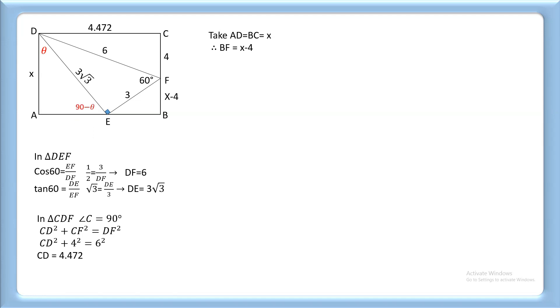Therefore, angle DEA equals 90 degrees, so angle FEB equals θ and angle EFB equals 90° minus θ. According to angle-angle-angle similarity, triangle ADE and triangle BEF are similar triangles. This is the diagram of the similar triangles with the given data.